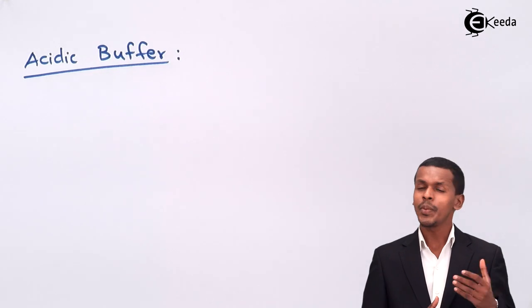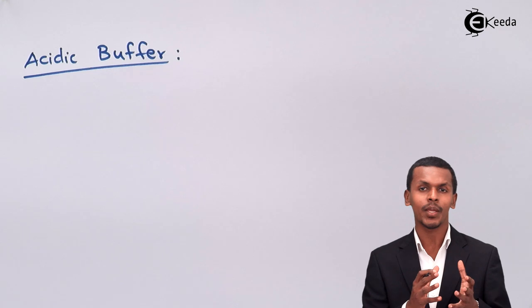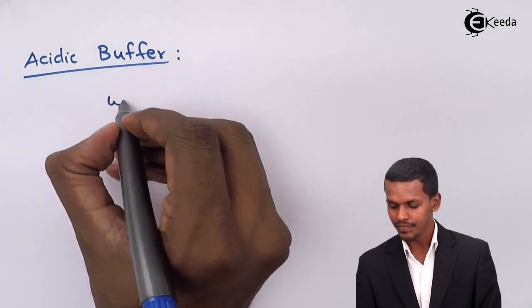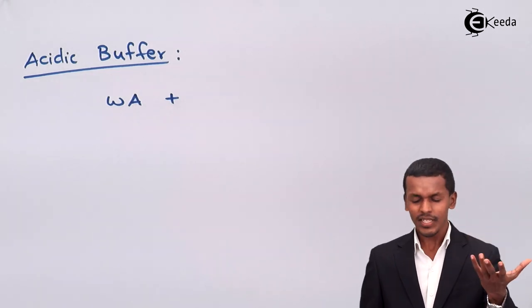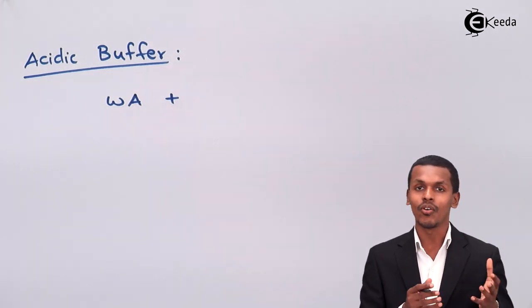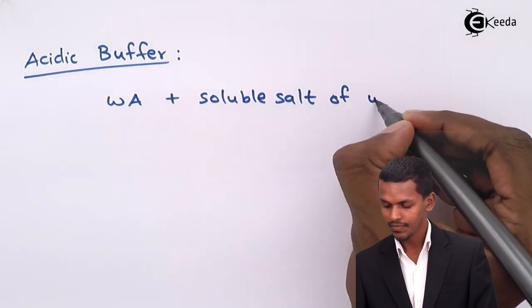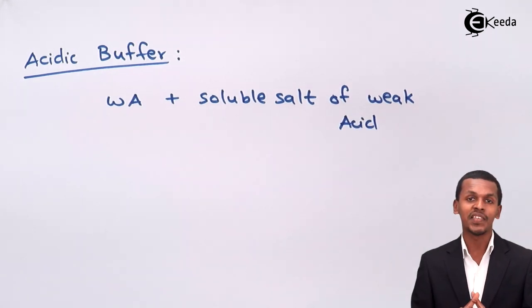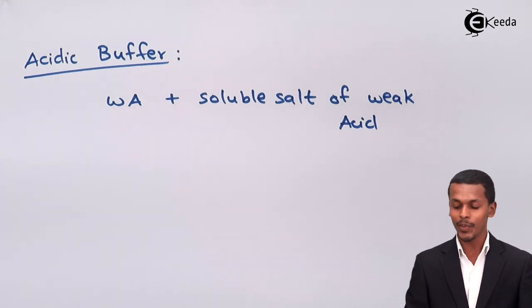Let us understand the mechanism of the acidic buffer. From the previous lecture, we know that an acidic buffer is prepared by taking a weak acid along with a soluble salt of that weak acid, which consists of a strong base. That is how an acidic buffer is prepared.